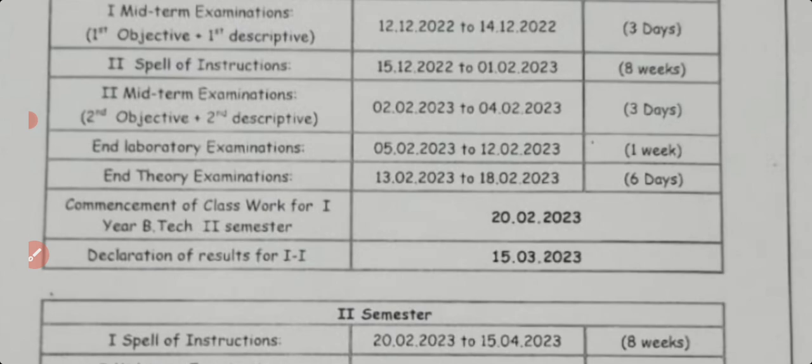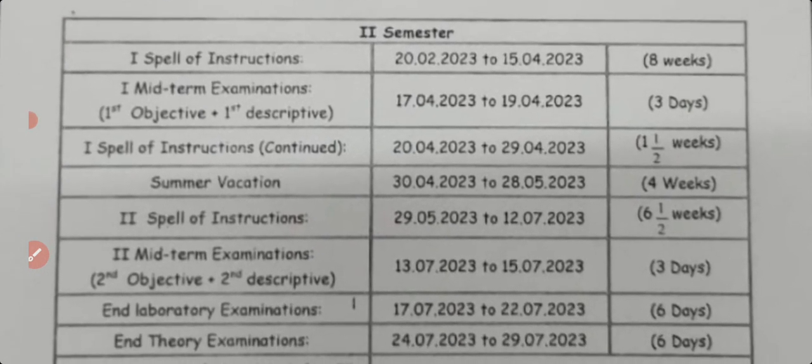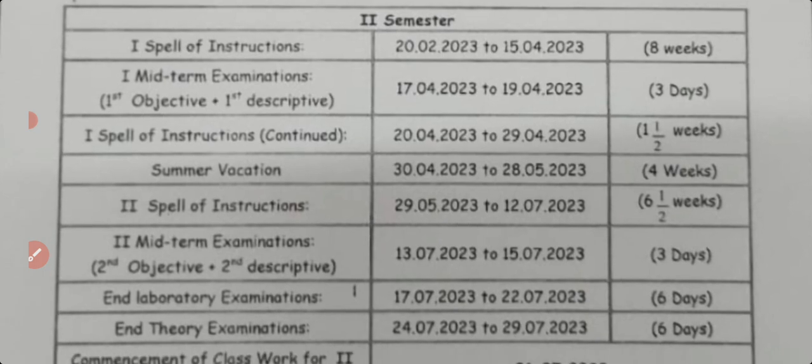Moving on to second semester: the first spell of instructions begins with a first meet from March 17th to March 19th — three days. The first spell of instructions then continues from March 24, 2023 to March 29, 2023 — one and a half weeks continued.